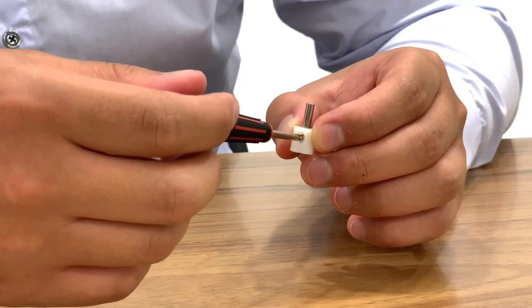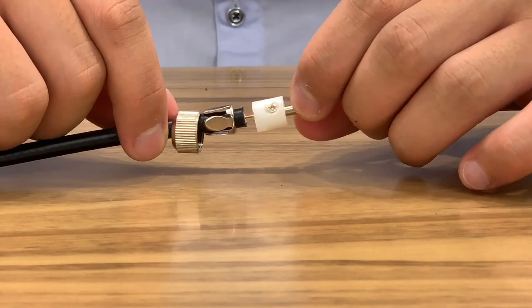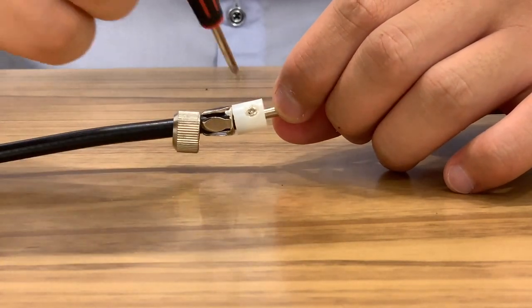Now loosen the phillips screw on the center connector until the core conductor of the cable slots in. Once it is inside tighten the screw to secure it.